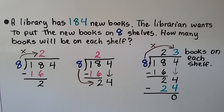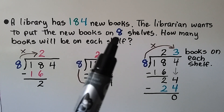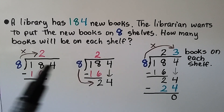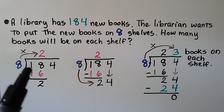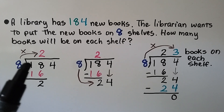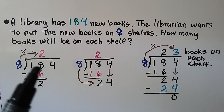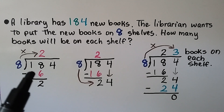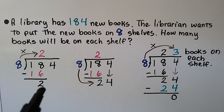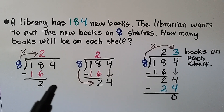A library has one hundred eighty-four new books. The librarian wants to put the new books on eight shelves. How many books will be on each shelf? So we need to find one hundred eighty-four divided by eight. We write our problem and ask: how many times can eight fit into this one? It can't. So then we ask: how many times can eight fit into eighteen? Well, eight times two is sixteen, so we do eight times two. We write the sixteen here, subtract and get a two.